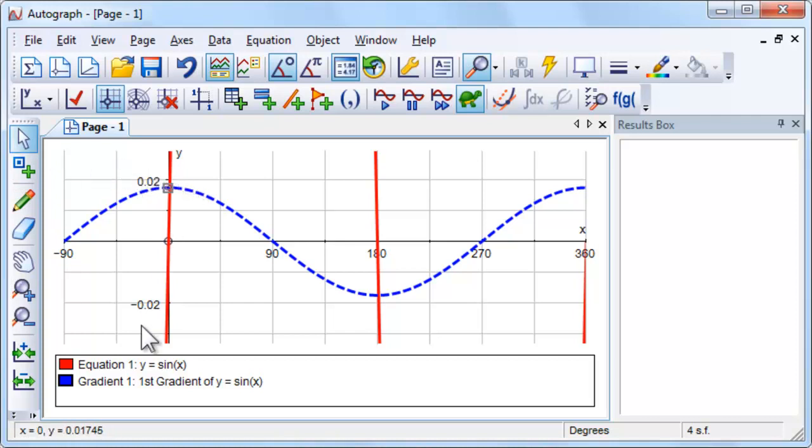The value of y is pi divided by 180, and the reason is because in degrees, the derivative of sine x is pi divided by 180 times cos x.